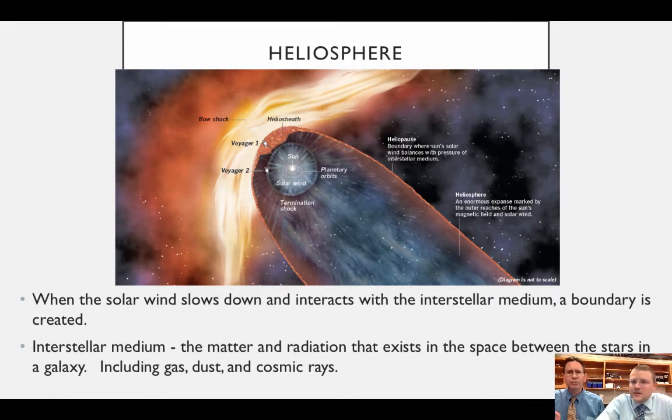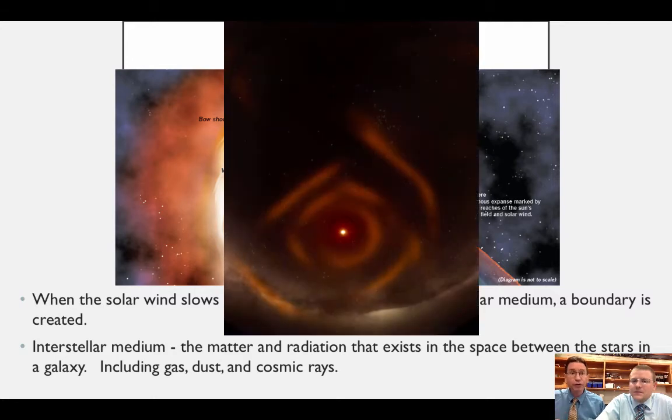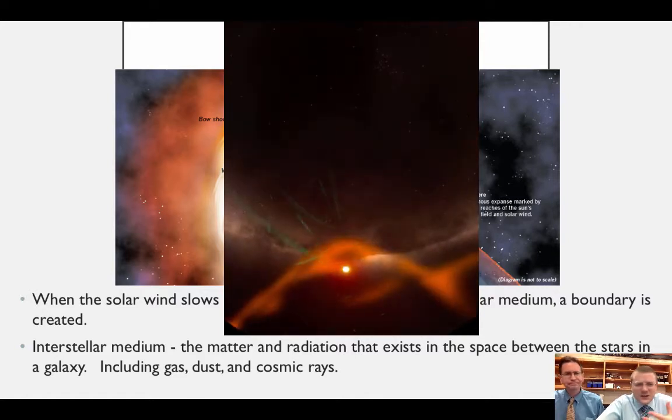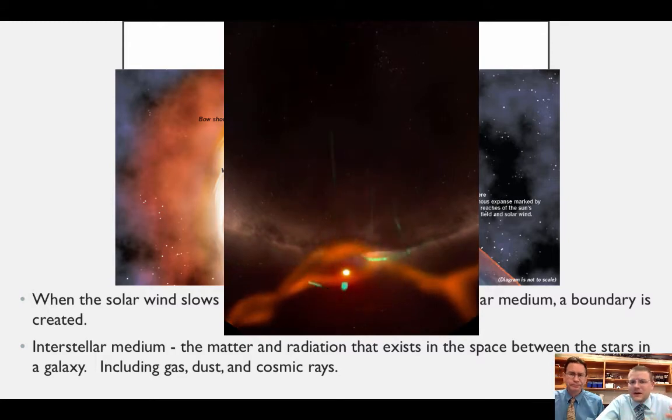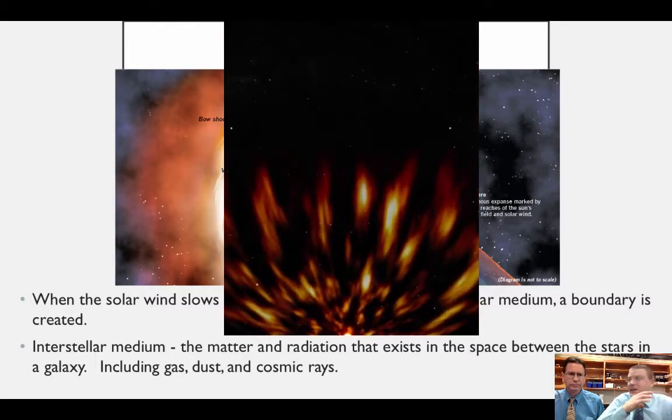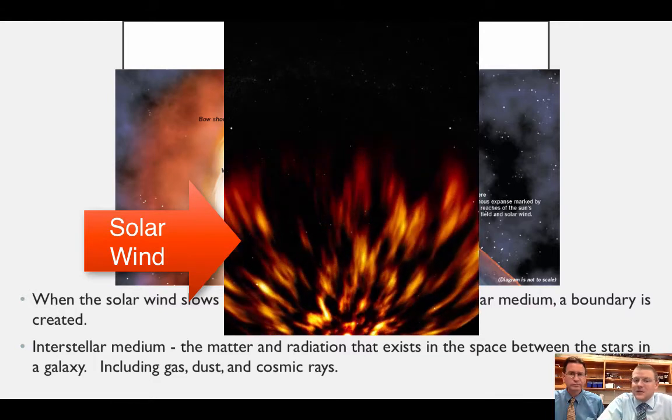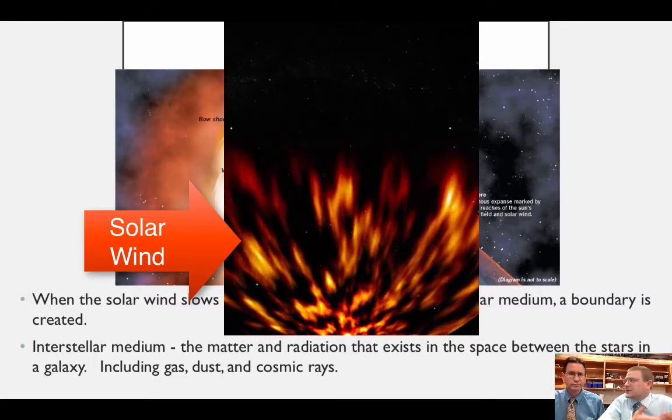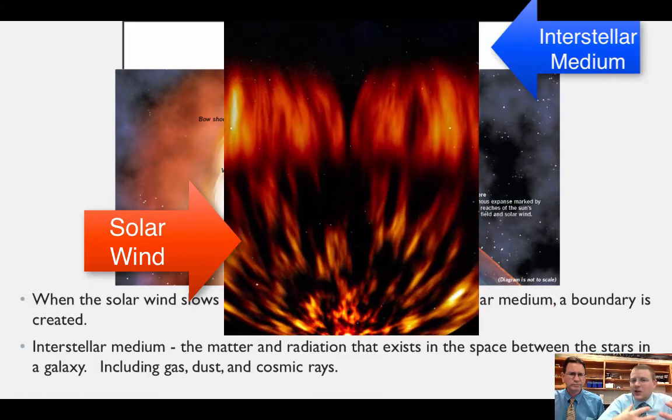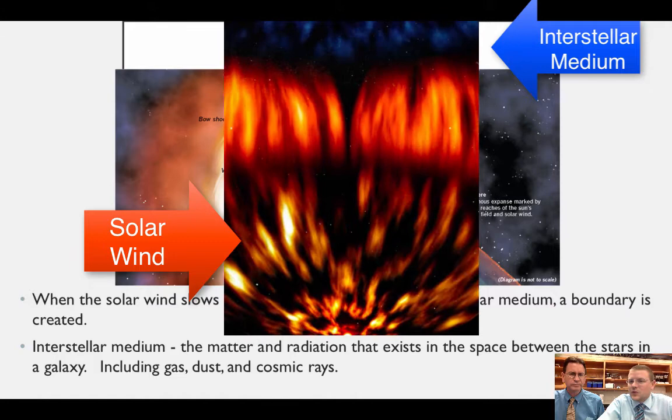And the heliosphere is those charged particles actually going further out into space than any of the things we mentioned before and coming in contact with what we know as the interstellar medium. And the interstellar medium is really just any matter or radiation that is between stars. So in that space where we say it's empty space, there's really stuff out there. Gas, dust, cosmic rays coming from other stars. And that hits our own sun's solar wind.